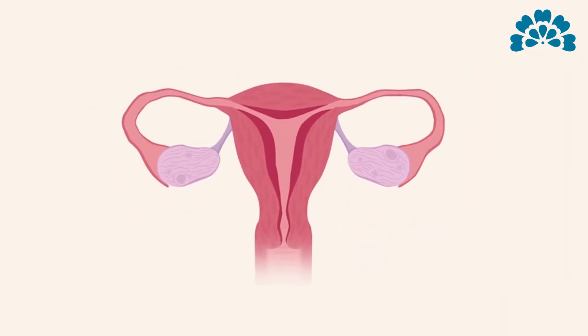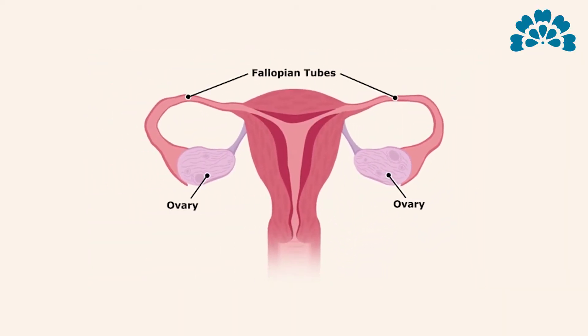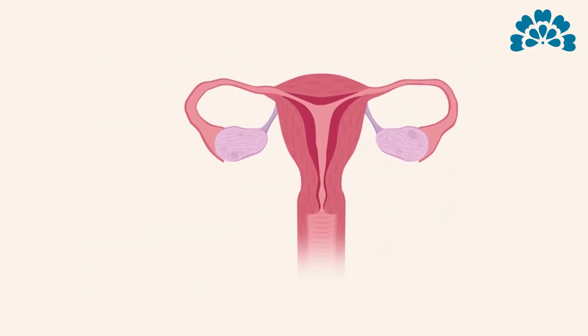I ask them to imagine the ovaries like a water tank, with two pipes connected to the tank — which are called the fallopian tubes. If the tank is full of water, through the pipe the water will come out. Similarly, because our ovary is full of eggs, every month one matured egg will discharge from the ovary.